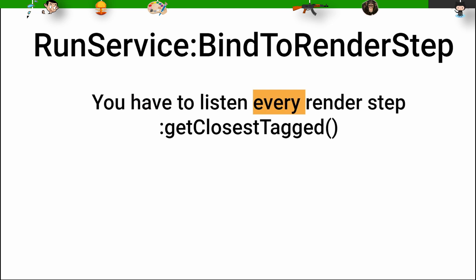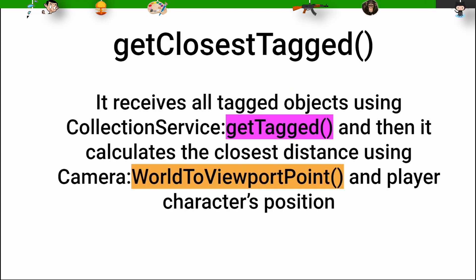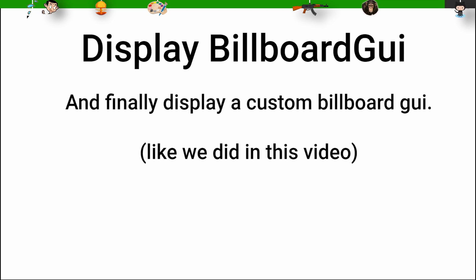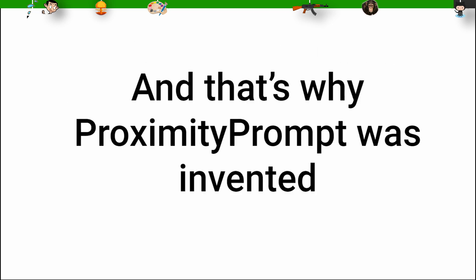Then you need to listen to every single render step, implement a get closest tagged function, and finally display a billboard like we did before in this video. And that's why proximity prompt was invented.